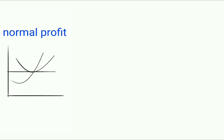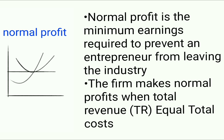Normal profit is the minimum earnings required to prevent a firm from leaving the industry. You could say the business made zero profit — it didn't make a loss, and it didn't make a profit. The firm makes normal profit when total revenue equals total cost, meaning the business didn't make any profit and didn't make any loss.